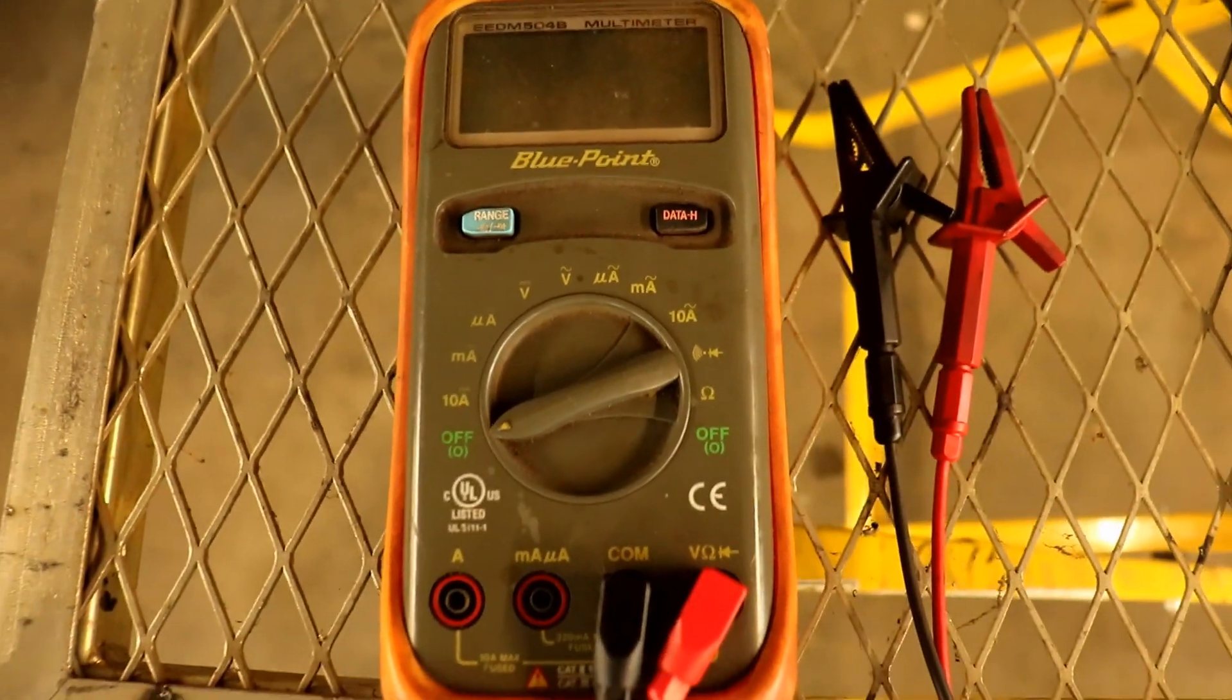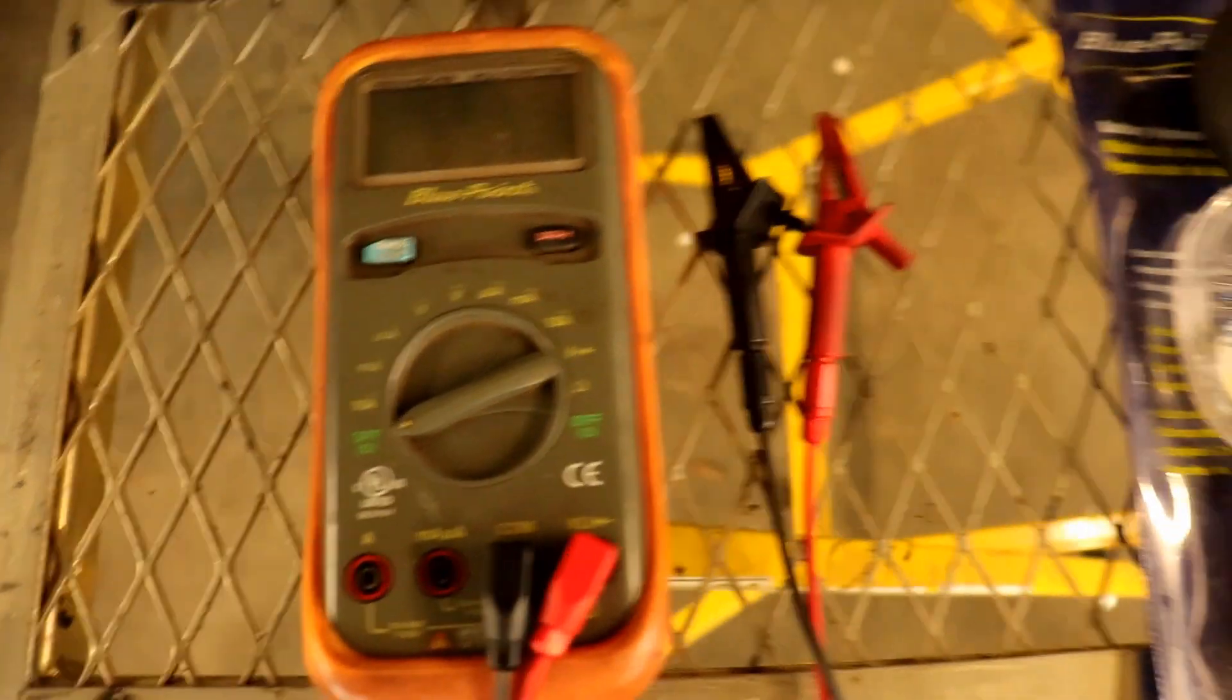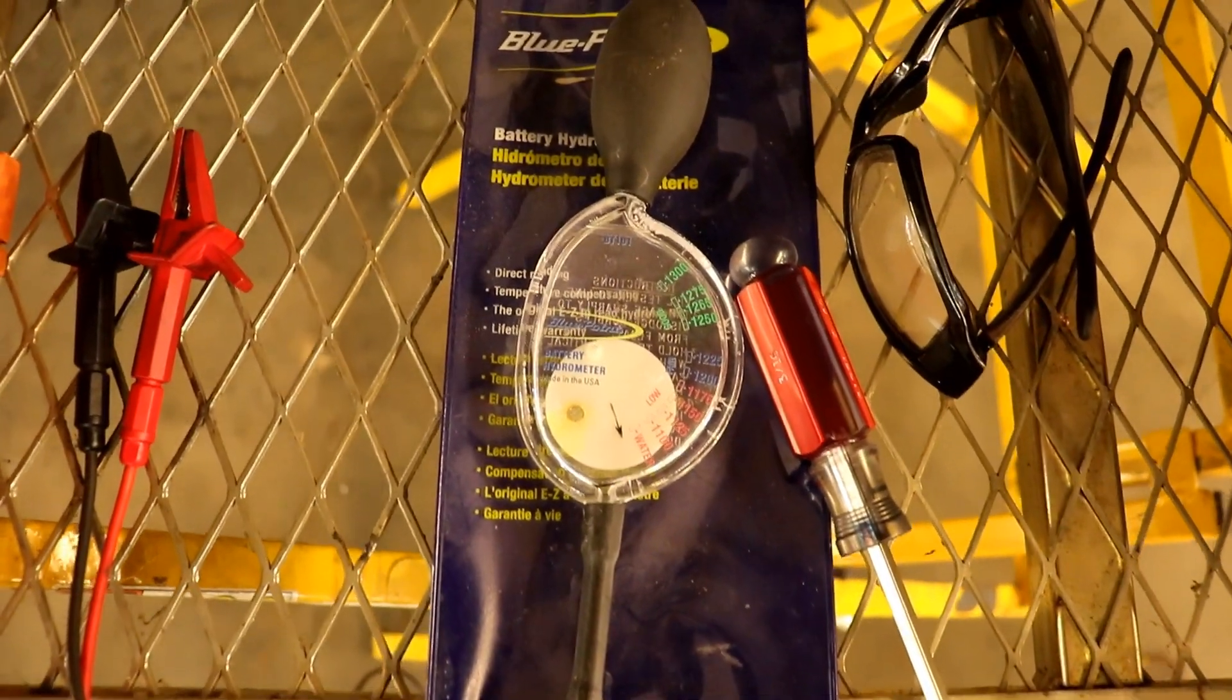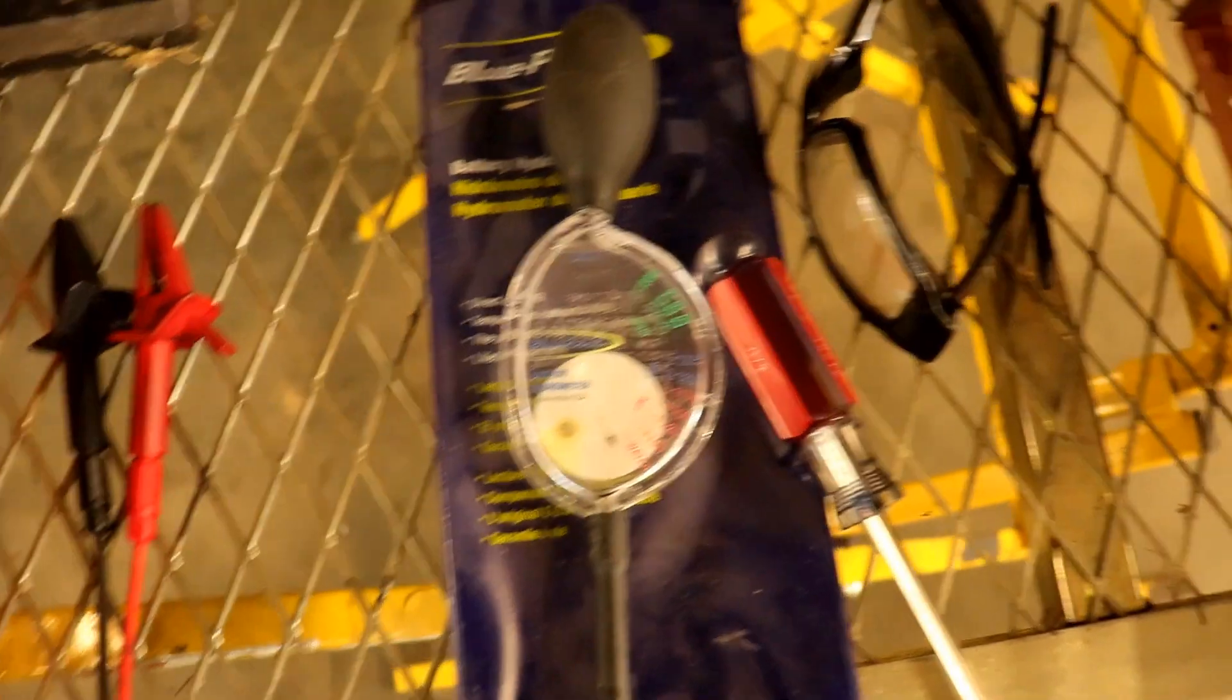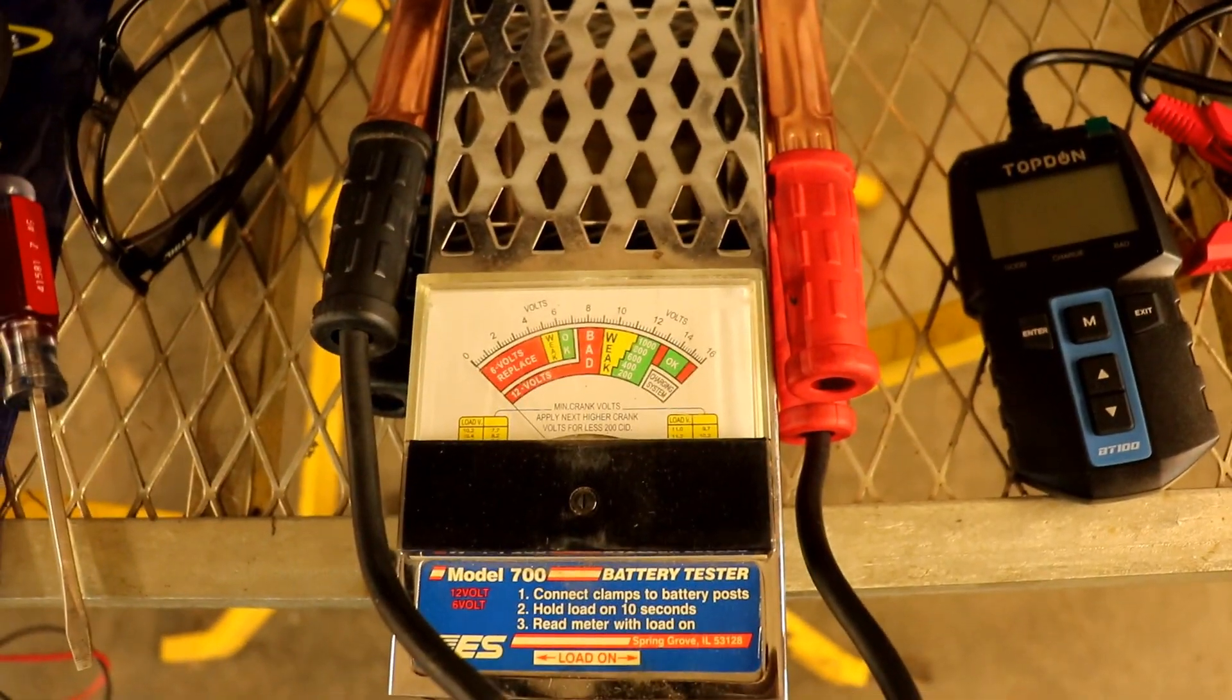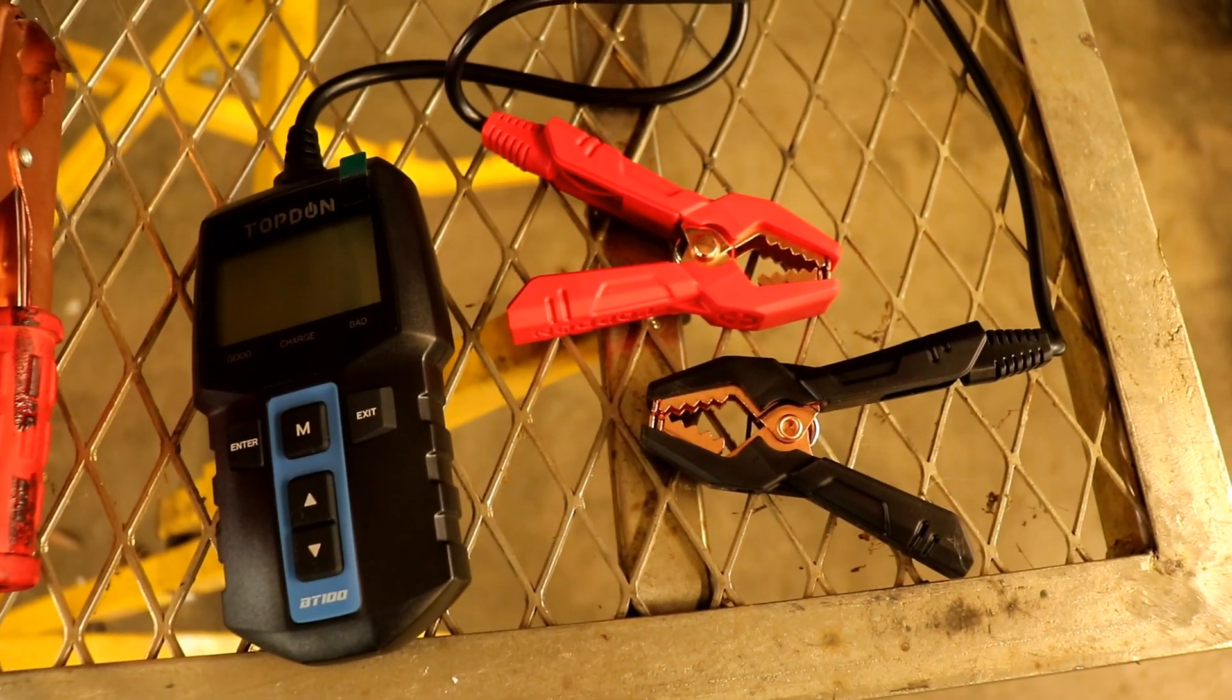First tool is a multimeter. It needs to be of decent quality so you can get an accurate reading. The next tool is a battery hydrometer. Then we're going to look at a battery load tester and last a battery tester.